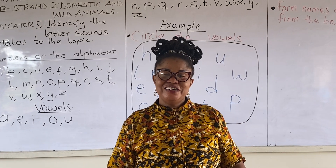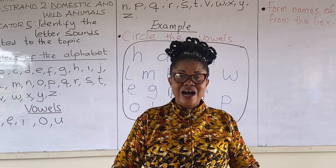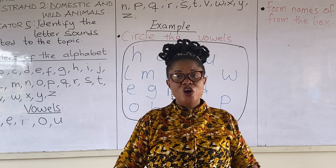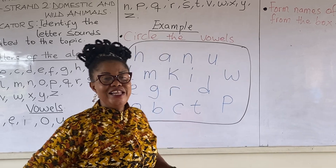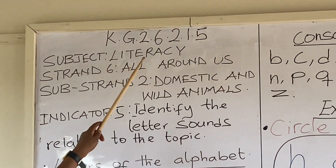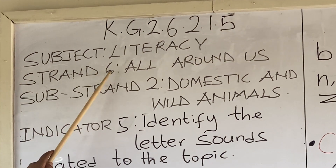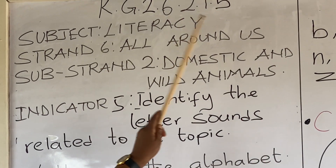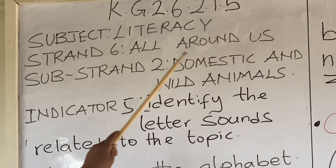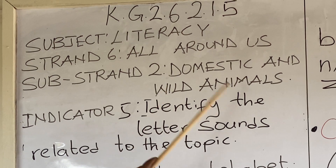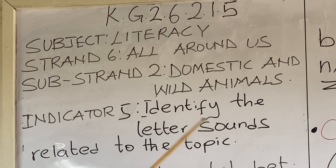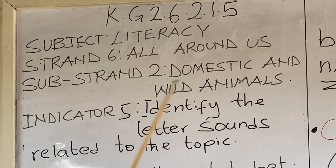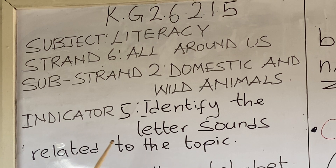Hello. Welcome to Little Smalls Kindergarten 2 Online Tutorials. Today's tutorial is on Literacy, taken from strand 6, All Around Us, sub-strand 2: Domestic and Wild Animals, indicator 5: Identify the letter sounds related to the topic.